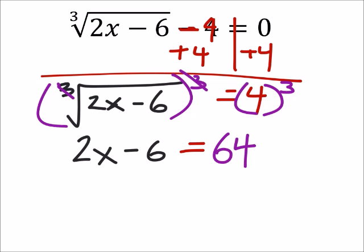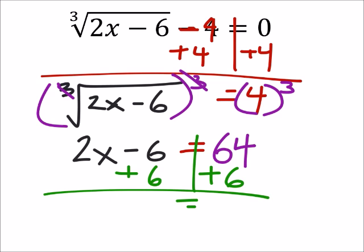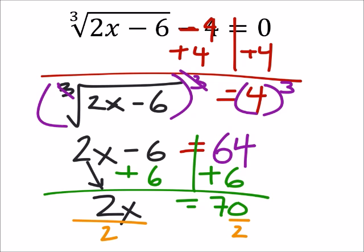So now that we have this, we want the x's on their own side because there's no radicals to get rid of anymore. So we're going to add six to both sides, and 64 plus 6 is 70. And we've still got this 2x here. So 2x equals 70, and then we'll divide both sides by two. And that leaves us with x equals 35.